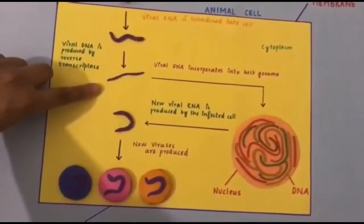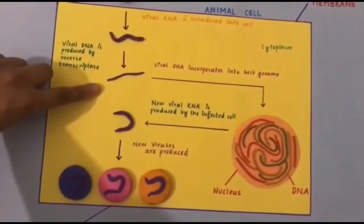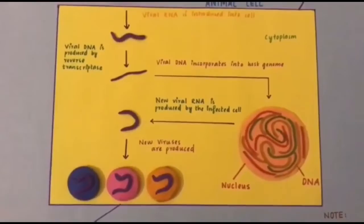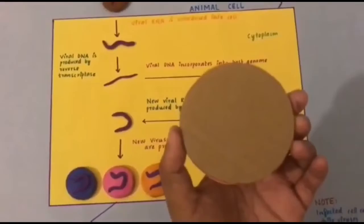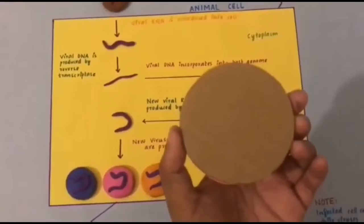And this viral RNA is converted into viral DNA. That is, viral DNA is produced by reverse transcriptase. The viral DNA that is produced by reverse transcriptase is incorporated into the host genome. This is the nucleus of the animal cell. And this animal cell was made by covering a cardboard with color paper.